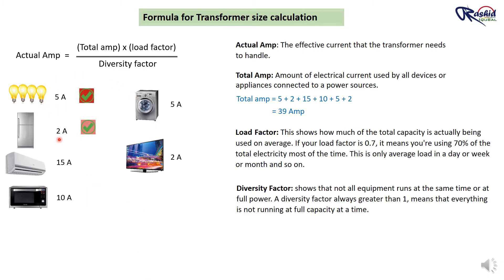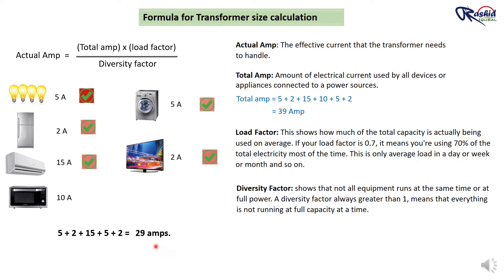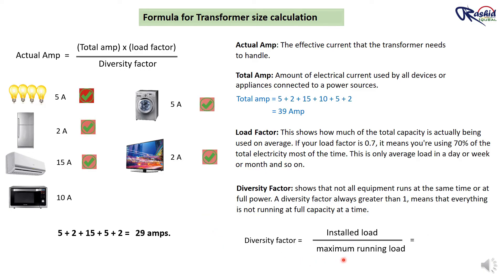But in the whole day, there will be a time when you turn on the maximum appliances for a short interval — like lights, refrigerator, air conditioner, washing machine, and TV. During this short period, the load is calculated as 5 + 2 + 15 + 5 + 2 = 29 Ampere, which is the total maximum running load. We can then calculate the Diversity Factor as installed load ÷ maximum running load = 39 ÷ 29 = 1.3.